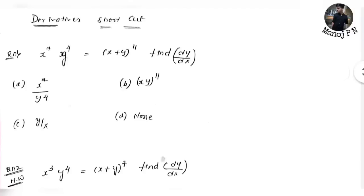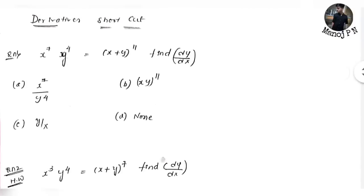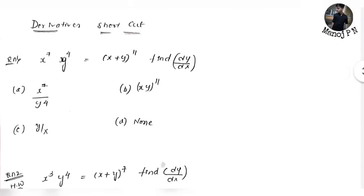When you are getting out of this problem, without any further delay, look at the question. x to the power of 7 into y to the power of 7, which is equal to x plus y to the power of 11. Find dy by dx. We are going to ask questions. If we observe this question, if you have x and y terms.